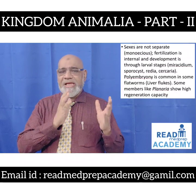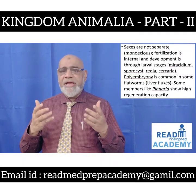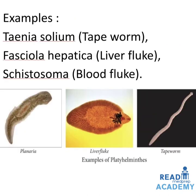Sexes are not separate — they are monoecious. Fertilization is internal, and development is through larval stages like the miracidium, sporocyst, redia, cercaria; polyembryony is common in some flatworms like the liver fluke. Some members like Planaria show high regeneration capacity. In this image you can see the life cycle: the adult lives in the host (sheep), eggs are passed in feces and develop in soil as miracidium larvae, forming sporocysts, then redia larvae, then cercariae encysting on herbage, which are consumed by the sheep as metacercaria and develop into adult worms. Examples: Taenia solium (tapeworm), Fasciola hepatica (liver fluke), Schistosoma (blood fluke).